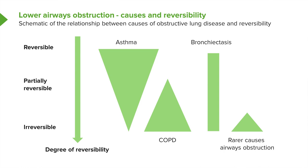Reversibility indicates asthma; irreversibility suggests COPD — but there's more to it. Patients with COPD need to have a smoking history. However, there are patients who overlap in the middle. For example, if you have an asthmatic who's been asthmatic since childhood but has been smoking since the age of 20, by the time they get to 50 they may have quite a significant degree of irreversible airways obstruction — and that will be COPD because of the smoking on the background of asthma.